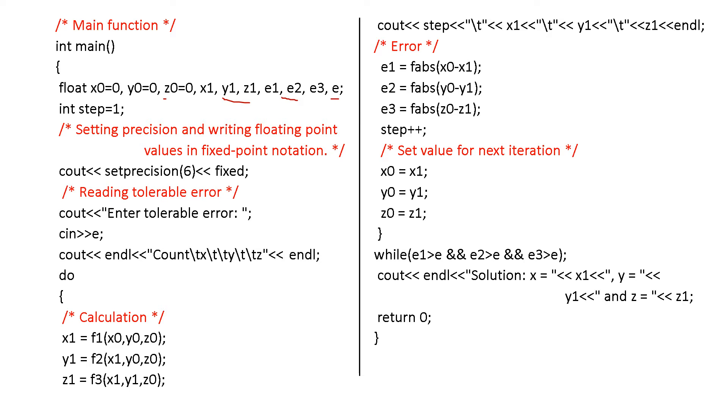For that calculation only, this tolerable error e and e1, e2, e3, there is an error value of the first variable x1, second variable y1, and the third variable z1. Three variables are x0, y0, z0. The initial values, they are 0 and next iteration x1, y1, z1. And then this iteration step is equal to 1.